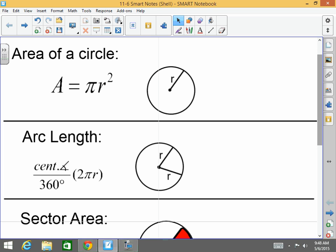So central angle or arc measure, it could be either or. Sometimes they give you the central angle, but it could be arc measure. Remember arc measure is in degrees. Over 360 times 2πr, which is circumference.